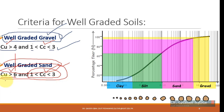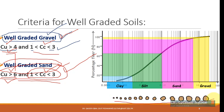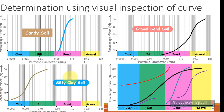If Cu is less than 4 (e.g., 2 or 1) and Cc is between 1 and 3, it is uniformly graded. If Cu is greater than 4 but Cc is less than 1 or greater than 3, it is gap graded. These criteria apply to both sand and gravel. Numerically you can measure whether all different particle sizes are present, and you can also determine this from visual inspection of the curve.